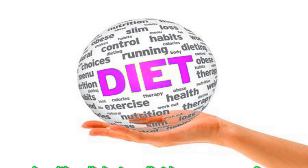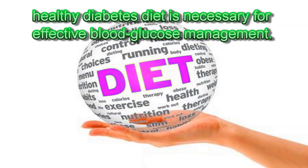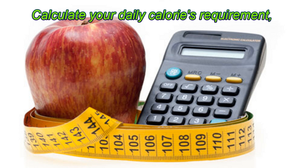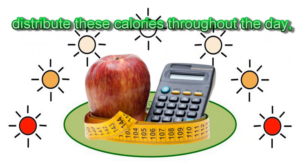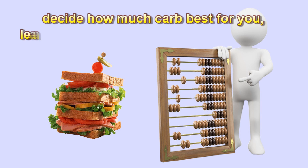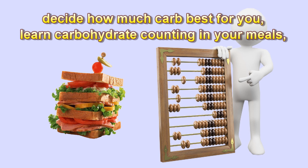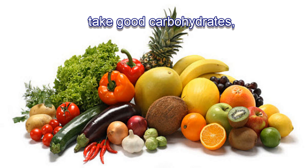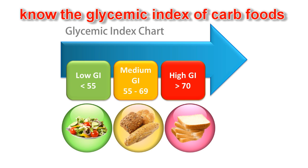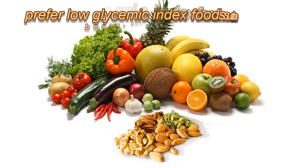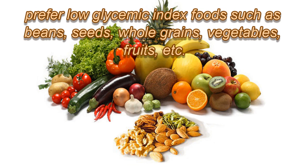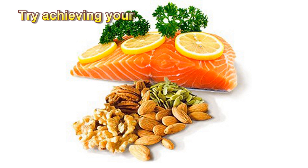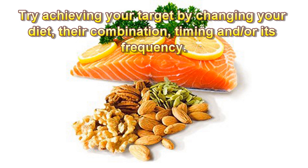Proper Diet: A healthy diabetes diet is necessary for effective blood glucose management. Calculate your daily calorie requirement, distribute these calories throughout the day, decide how many carbs are best for you, learn carbohydrate counting in your meals, and take good carbohydrates. Know the glycemic index of carb foods and prefer low glycemic index foods such as beans, seeds, whole grains, vegetables, fruits, etc. Try achieving your target by changing your diet, its combination, timing, and frequency.